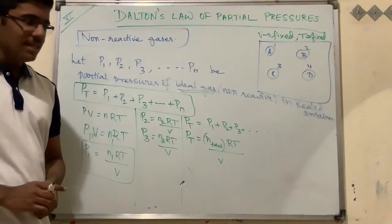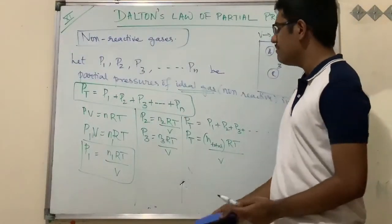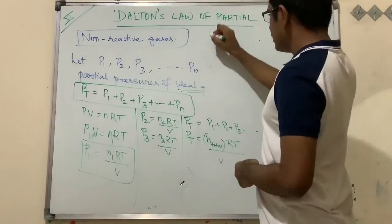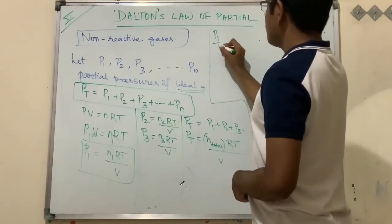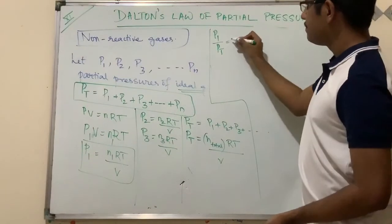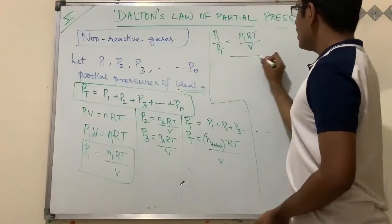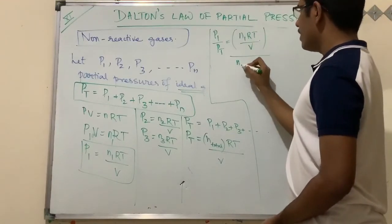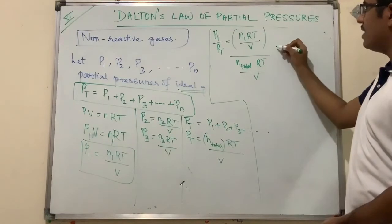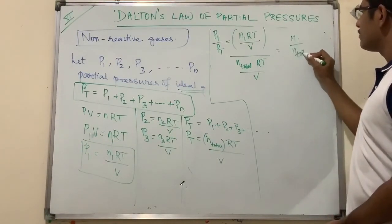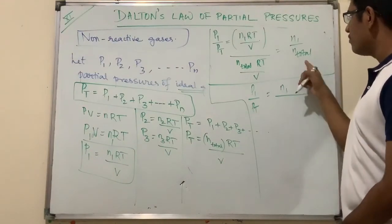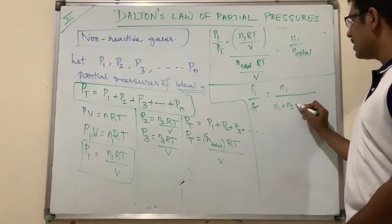Now the most important step in this derivation is to take the ratio of p1 divided by P_total. That gives us: p1/P_total = (n1·RT/V) / (n_total·RT/V). The RT/V terms cancel out, giving p1/P_total = n1/n_total, where n_total = n1 + n2 + n3 + ... + nn.